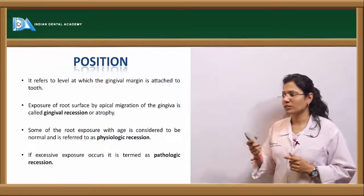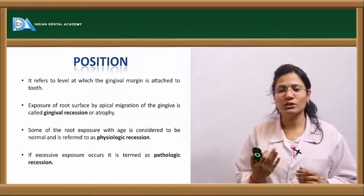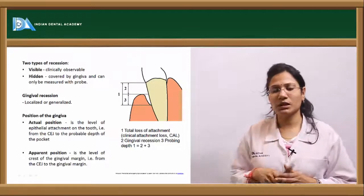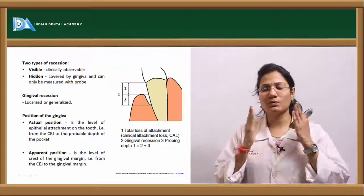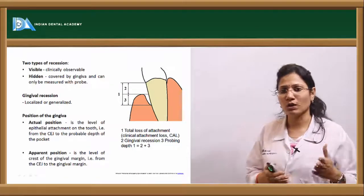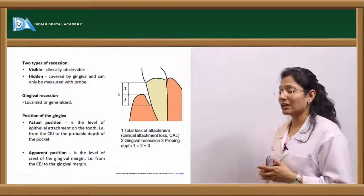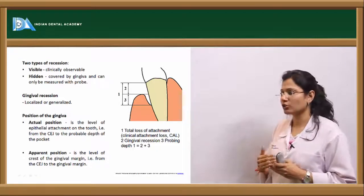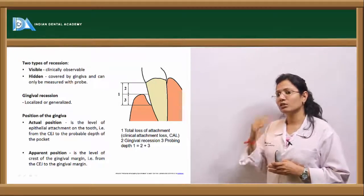Recession can be physiological — associated with age — or pathologic — due to apical migration of the marginal gingiva exposing root surfaces. Recession can also be classified as visible (clinically observable) or hidden (covered by gingiva and only measurable with a probe). It can be localized to one tooth or generalized to the entire dentition. The actual position is the level of epithelial attachment — from the cementoenamel junction to the probable pocket depth — whereas the apparent position is the level of the crest of the gingival margin.